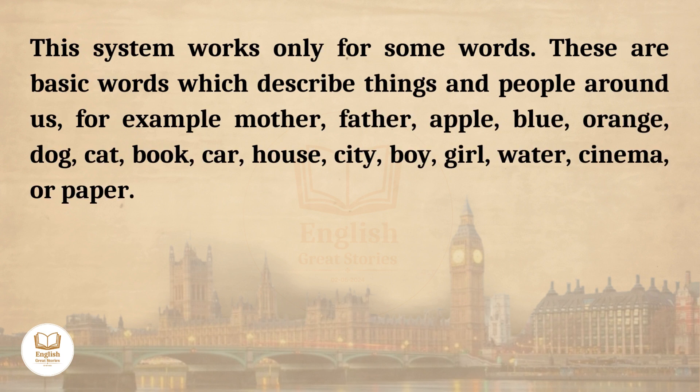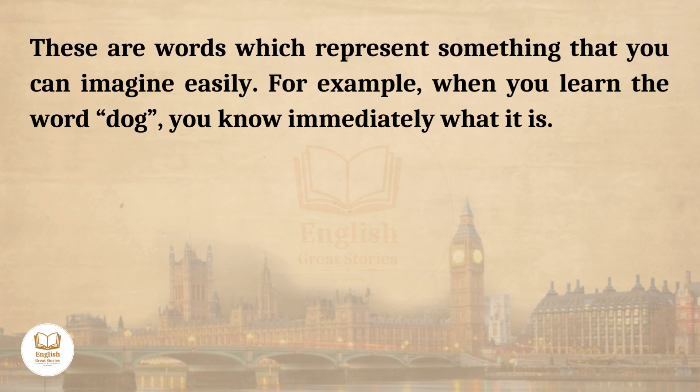This system works only for some words — basic words which describe things and people around us. For example: mother, father, apple, blue, orange, dog, cat, book, car, house, city, boy, girl, water, cinema, or paper. These are words which represent something that you can imagine easily.